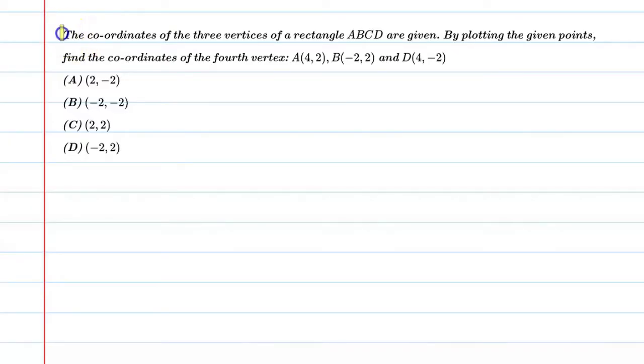Hello students, let's solve this question. The coordinates of the three vertices of a rectangle ABCD are given. By plotting the given points, find the coordinate of the fourth vertex: A is 4,2, B is -2,2, and D is 4,-2.